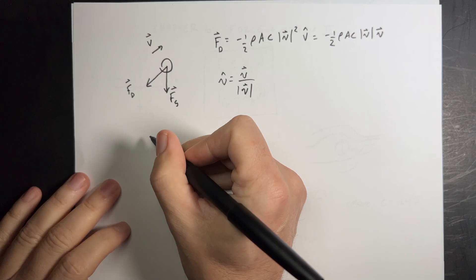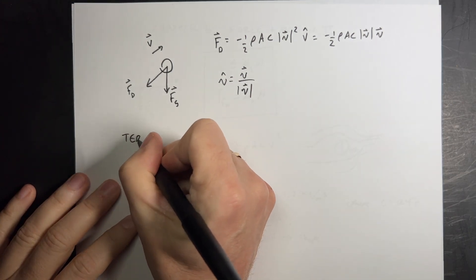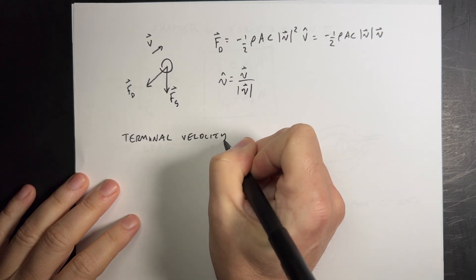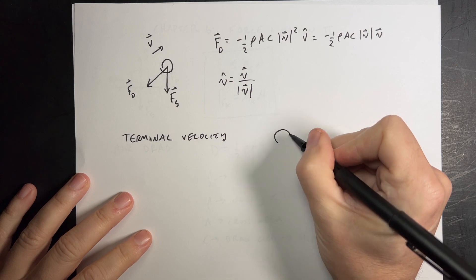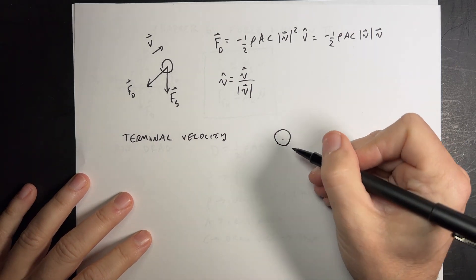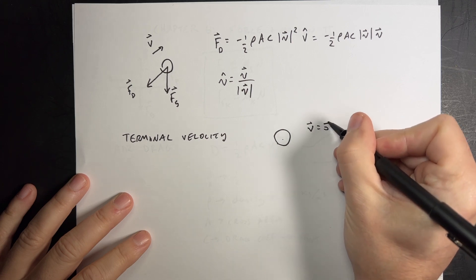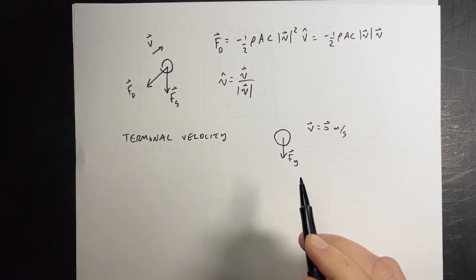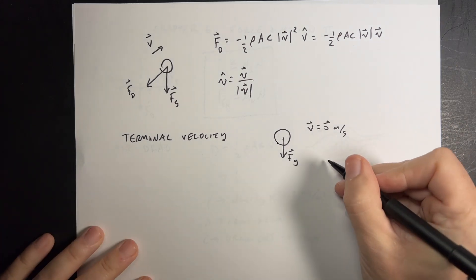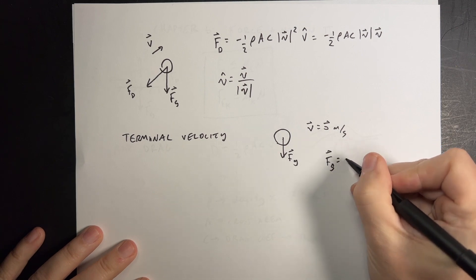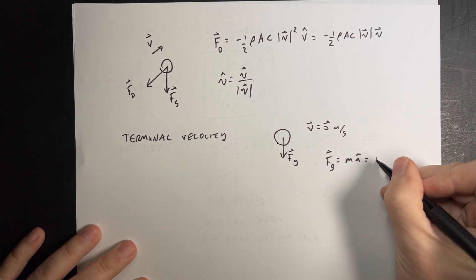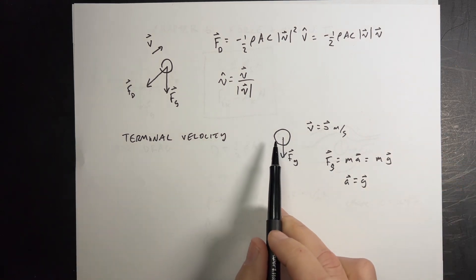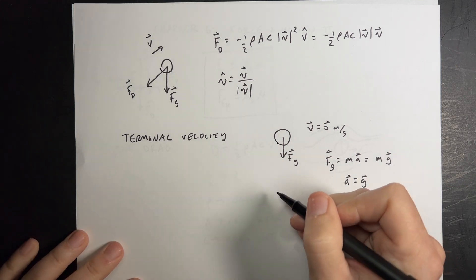One of the problems that is solvable is terminal velocity. So suppose I have a ball and I drop it. I release it from rest. At that point, the velocity is zero meters per second. That is a vector. So I only have the gravitational force on it, FG. If I only have the gravitational force on it, then FG equals MA equals MG. That's the gravitational force. So A is equal to G. In the Y direction, that means it's going to accelerate down at negative 9.8 meters per second squared.